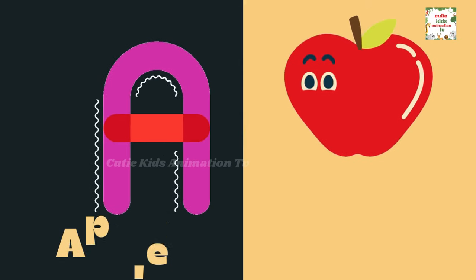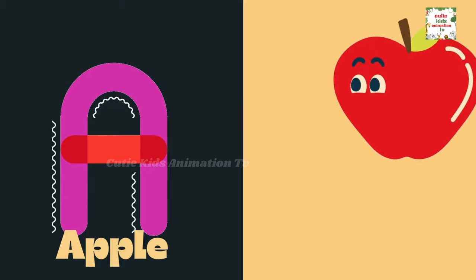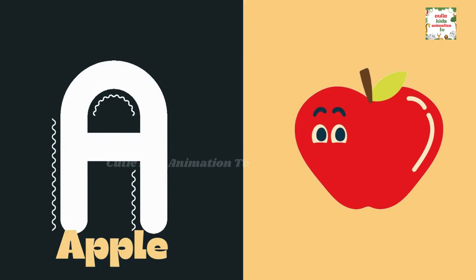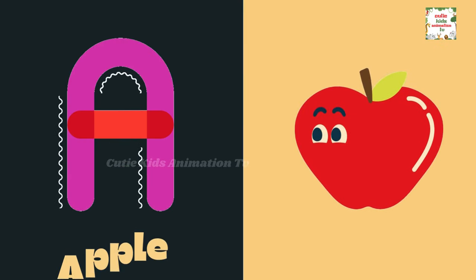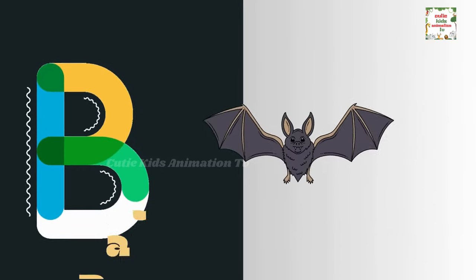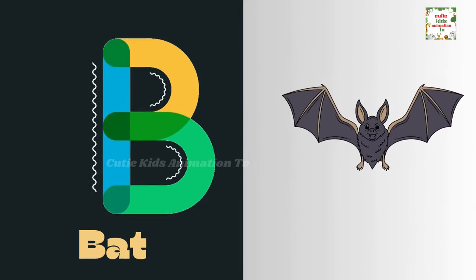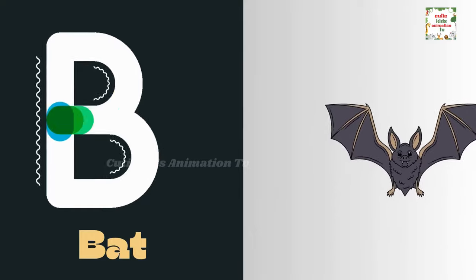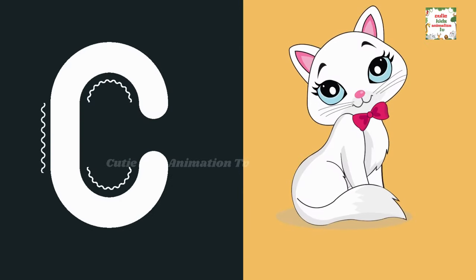A is for apple. A, A, apple. B is for bat. B, B, bat.